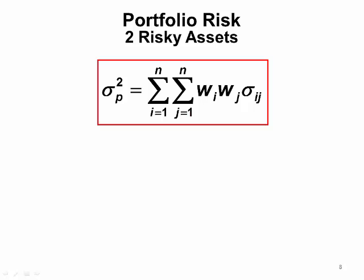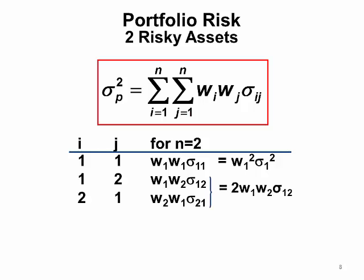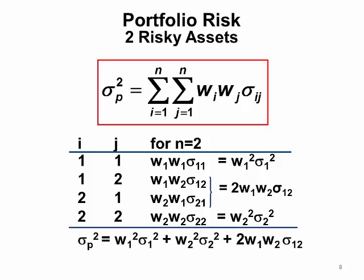Bringing this down to the 2 asset case makes it more manageable. The first component is weight of 1 squared times the variance of asset 1, since the covariance of asset 1 with itself is its variance. Note that the middle two terms — the covariance of 1 and 2 is the same as the covariance of 2 and 1 — that's where your factor of 2 comes in. And finally you have the squared entry for asset 2.